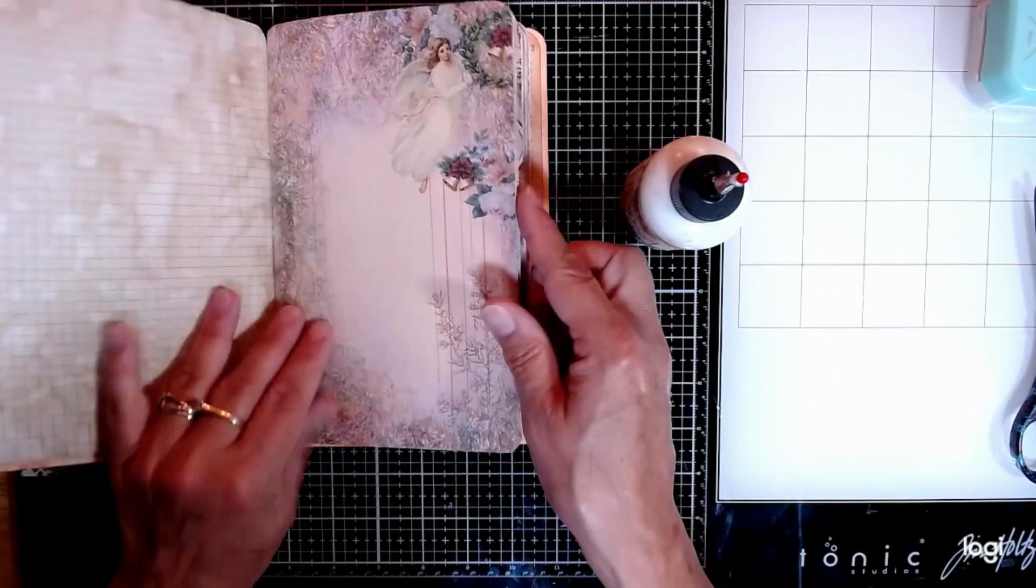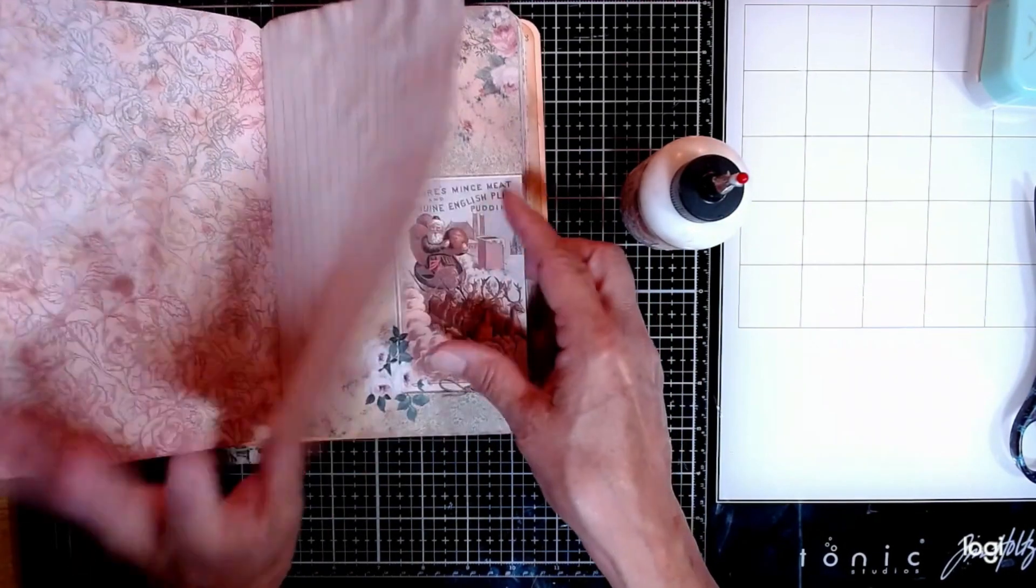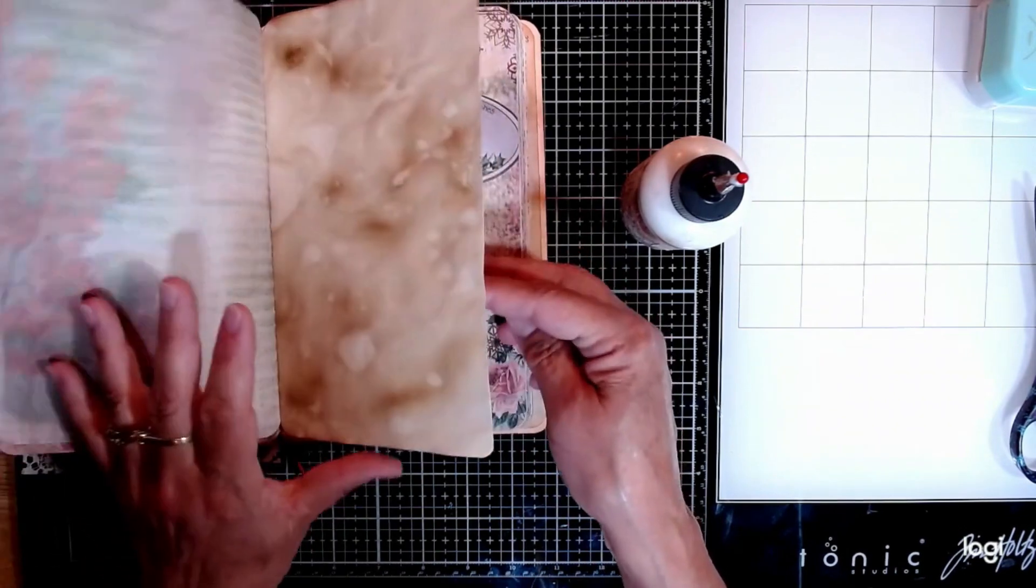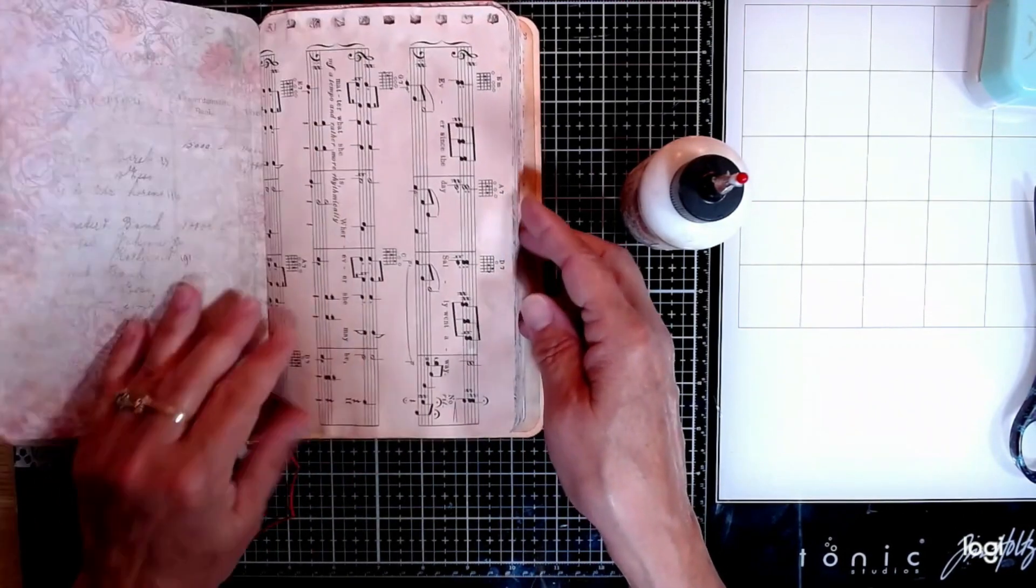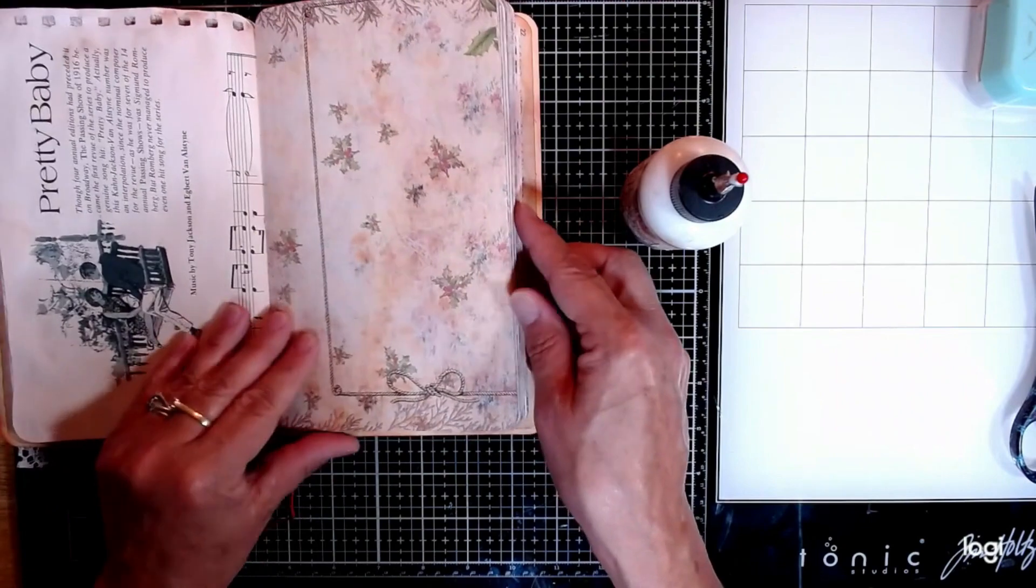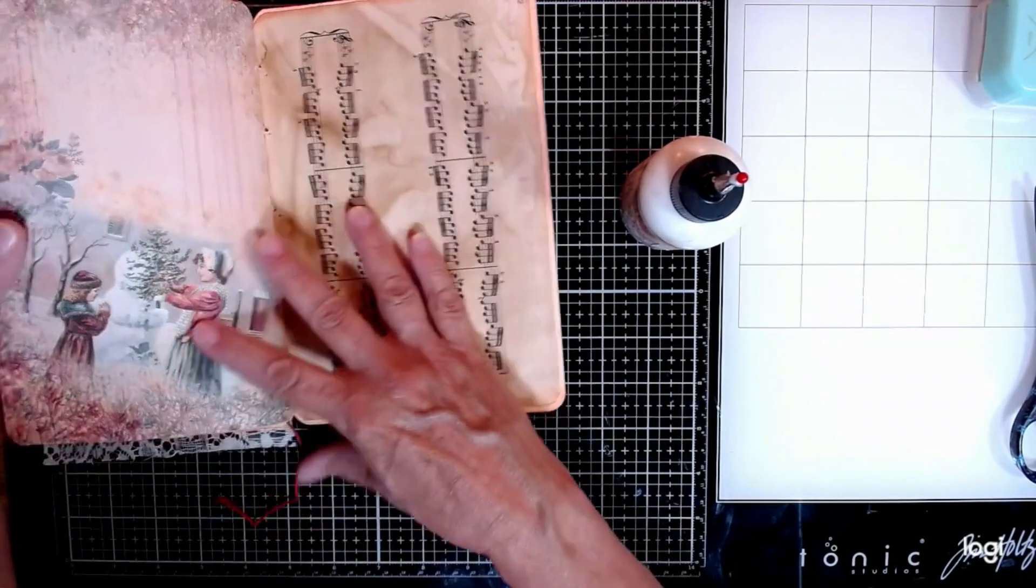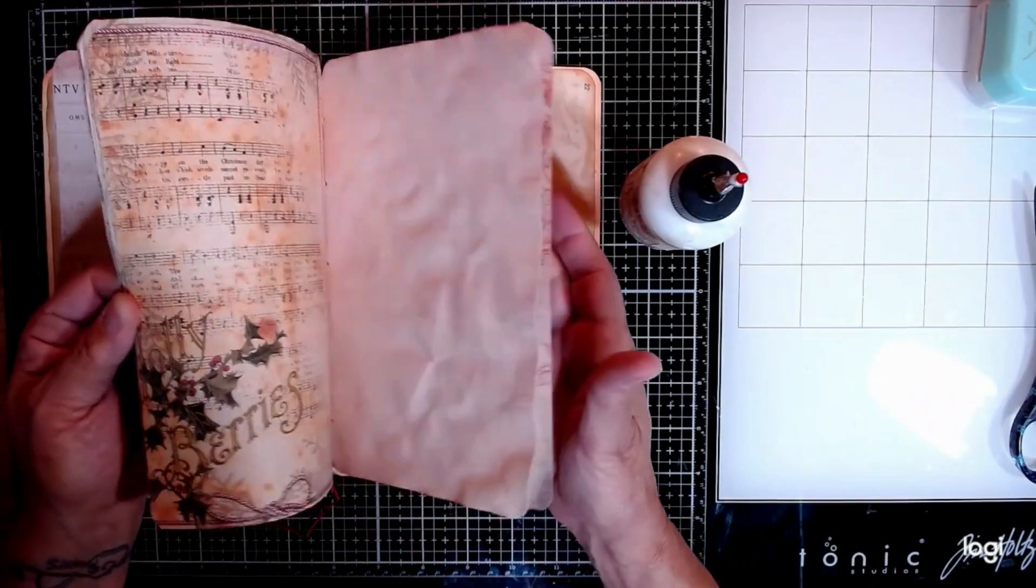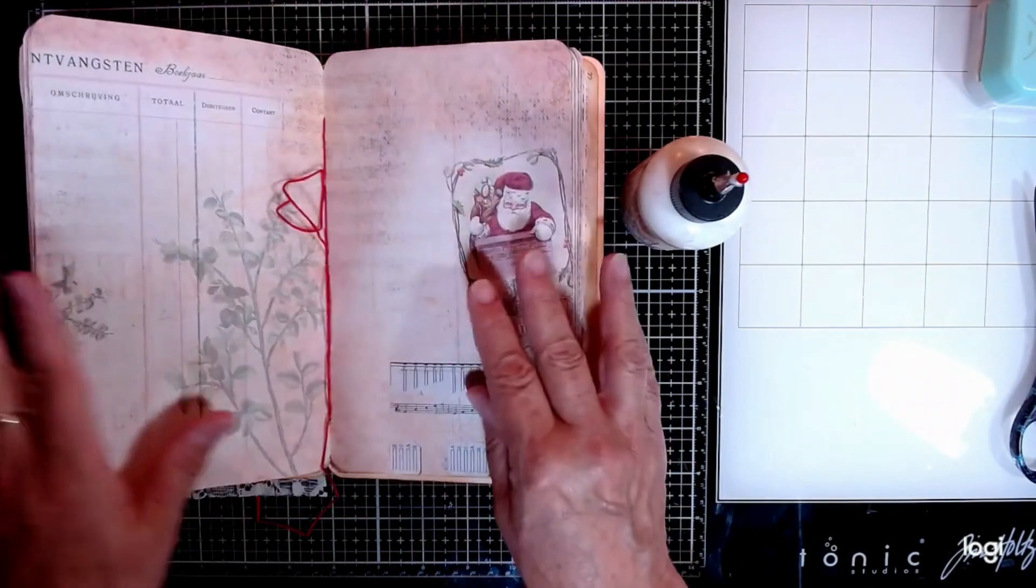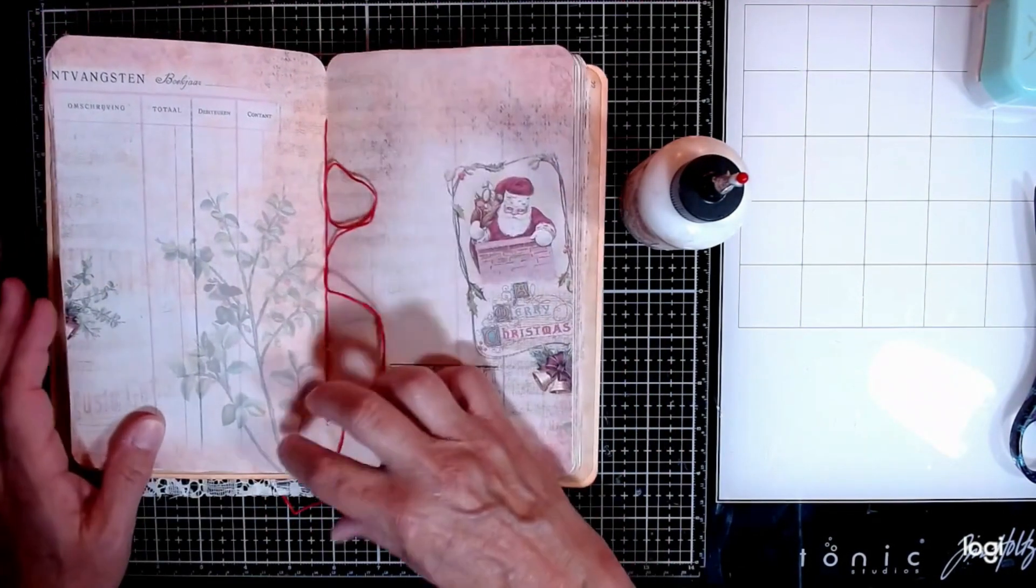And then I put in some avocado dyed papers, coffee dyed papers, more avocado dyed, another coffee dyed, avocado dyed music paper. And then the center signature. And over here it does the same thing. Of course you guys know that. And we will decorate this next time.